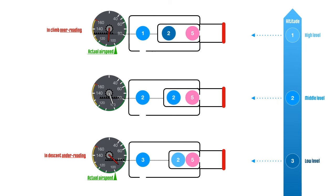What if the aircraft climbs or descends with a blocked pitot tube? In this case, the total pressure in the diaphragm gets trapped and remains constant. The airspeed is incorrectly displayed to be higher when the aircraft climbs, since the diaphragm further expands as the static pressure inside the case reduces.